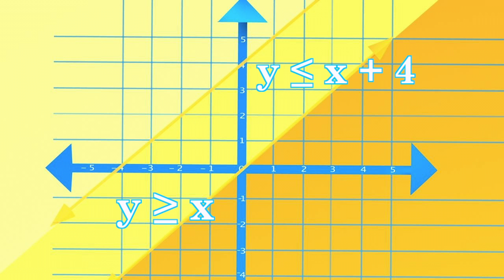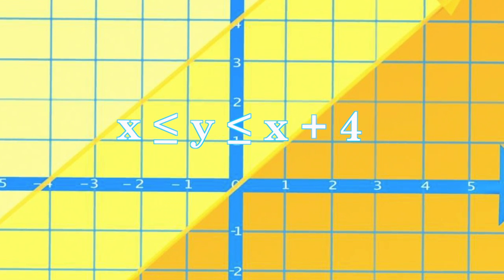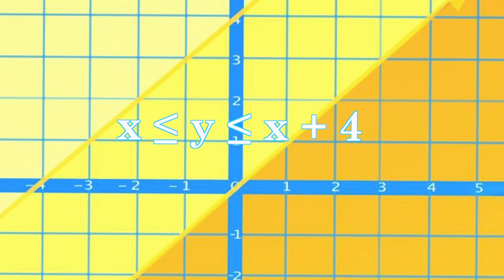We can also see that there's an overlap between the shaded region of these two inequalities. The shaded region represents all the values where y is greater than or equal to x and is less than or equal to x plus 4.